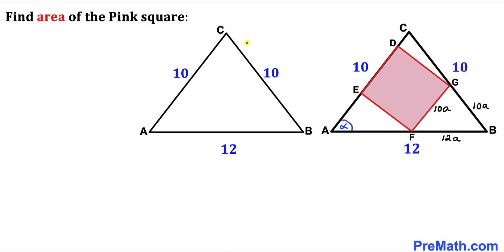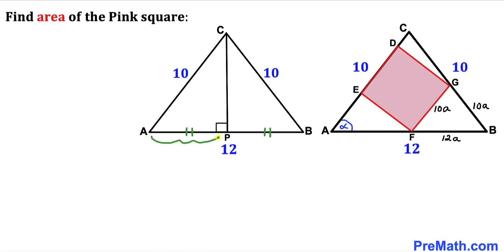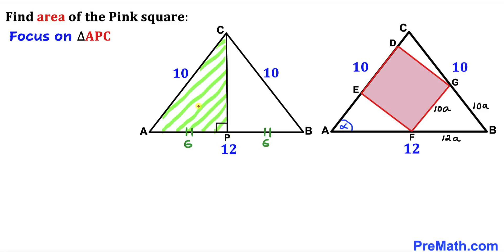Next, let's focus on triangle ABC. Drawing a perpendicular from C to AB at point P, since the two equal sides AC and BC have equal length, segment AP equals segment PB. So each half of AB is 12 divided by 2, giving us AP = PB = 6 units. We now focus on right triangle APC with sides 6 and 10 to find CP.